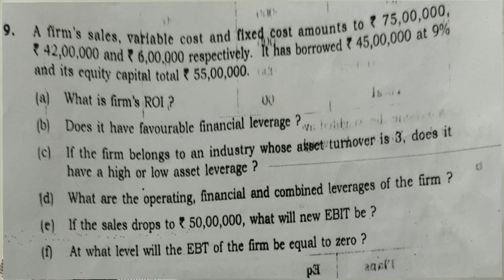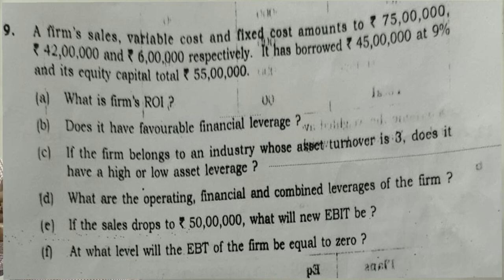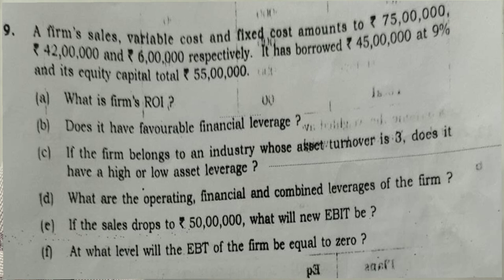Second semester financial management, 2019. It has 10 marks and is based on leverage. A firm has sales, variable cost, and fixed cost of ₹75 lakhs, ₹42 lakhs, and ₹6 lakhs respectively. It has borrowed ₹45 lakhs at 9% and its equity capital totals ₹55 lakhs. What is the firm's return on investment? Does it have favorable financial leverage? If the firm belongs to an industry whose asset turnover is 3, does it have high or low asset leverage? What are the operating, financial, and combined leverages of the firm? If sales drops to ₹50 lakhs, what will the new EBIT be? At what level will EBIT of the firm equal zero?